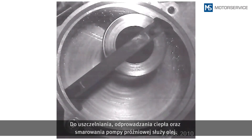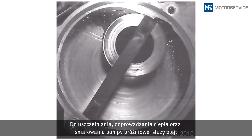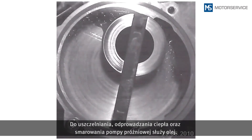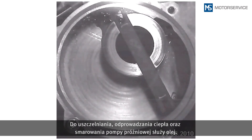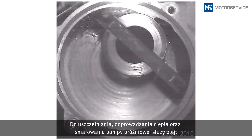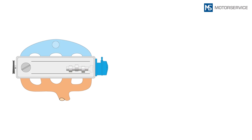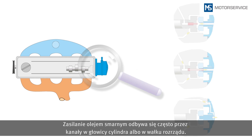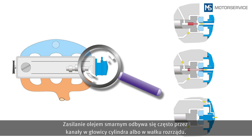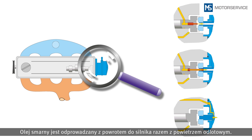Vacuum pumps require lubricating oil for internal sealing, for dissipating heat and for lubrication. Oil is frequently supplied through ducts in the cylinder head or the camshaft. The oil is fed back into the engine along with the exhaust air.